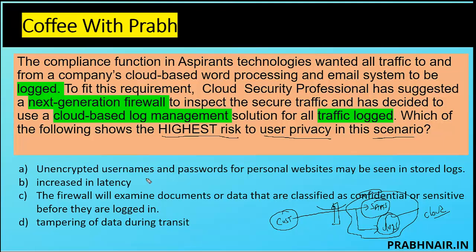Option A: unencrypted username and password for personal websites may be seen in the stored logs. That makes sense — logs will store username and password. Most people install proxy brokers so any information going through gets decrypted, read, then re-encrypted before going to the backend where it's stored in encrypted form. Still a concern. Option B: increase in latency — that's a concern, but the question is from a privacy point of view, and privacy is more about disclosure.